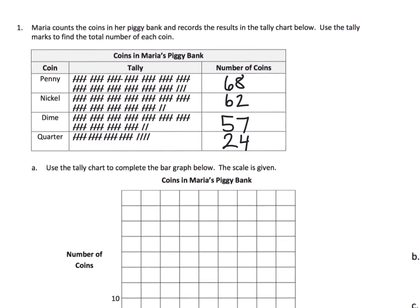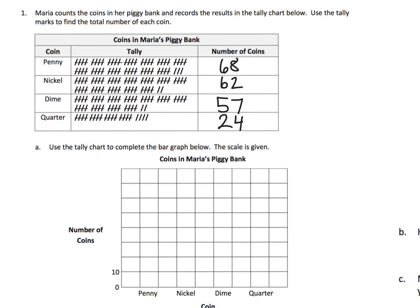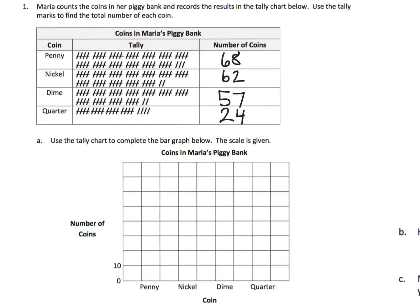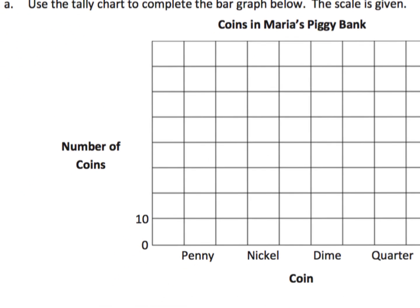Now I'm going to zoom out here. We're going to take a look and use that tally chart to graph our table down here. You'll notice at the bottom we've got coins — pennies, nickels, dimes, and quarters — and the title matches: coins in Maria's piggy bank. For the number of coins, they've started us off counting by 10s, so we need to continue: 20, 30, 40, 50, 60, 70, and all the way to the top gives us 80.